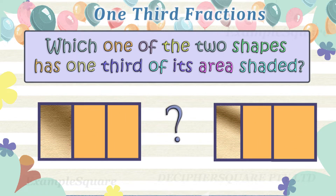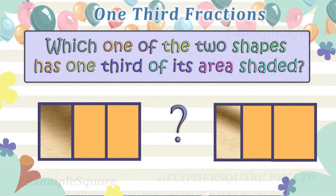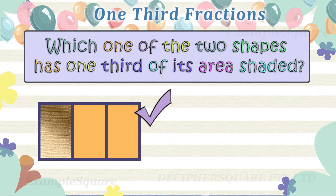Which one of the two shapes has one-third of its area shaded? This shape has one-third of its area shaded.